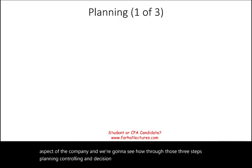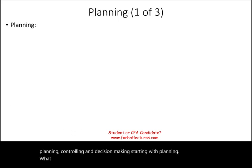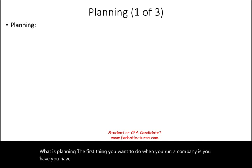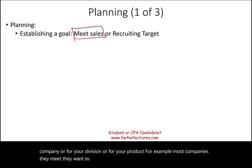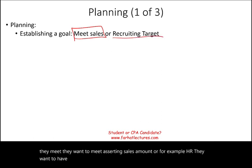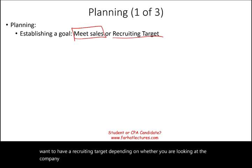Starting with planning. The first thing you want to do when you run a company is establish a goal — whatever that goal is for the whole company, your division, or your product. For example, most companies want to meet a certain sales amount, or HR might want to have a recruiting target. Depending on whether you're looking at the company overall or one particular part, you have to establish a goal.